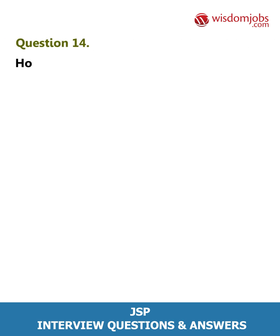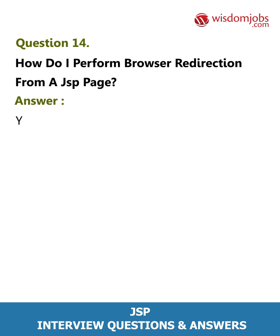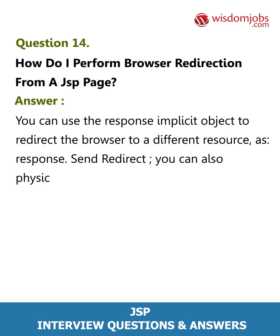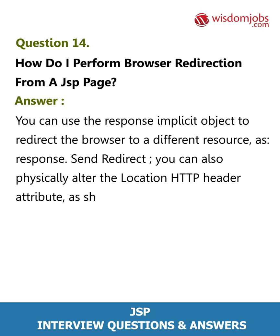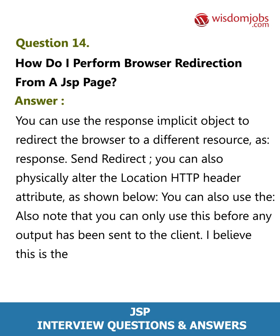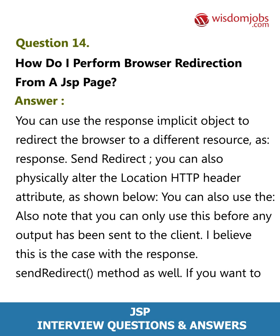Question 14: How do I perform browser redirection from a JSP page? Answer: You can use the response implicit object to redirect the browser to a different resource using response.sendRedirect(). You can also physically alter the Location HTTP header attribute. Note that you can only use this before any output has been sent to the client, which is also the case with the response.sendRedirect() method. If you want to pass any parameters, you can pass them using the URL.